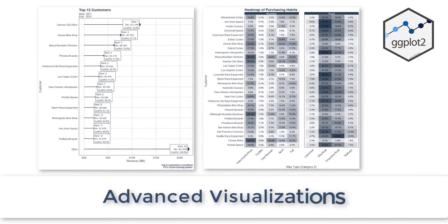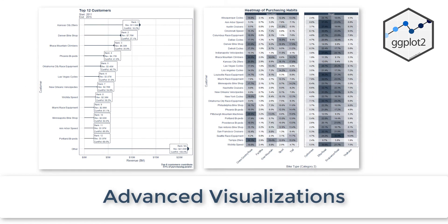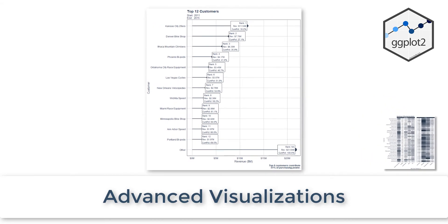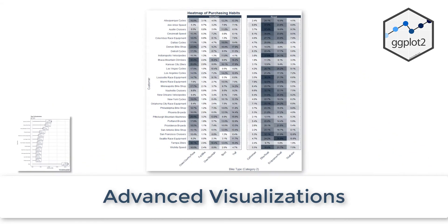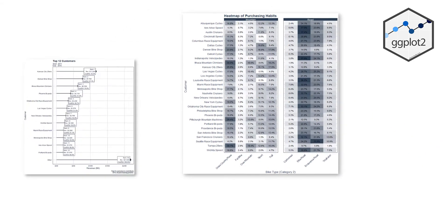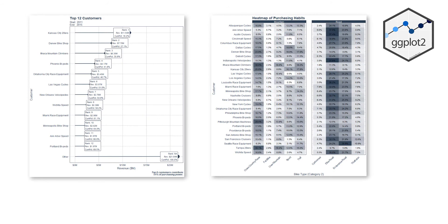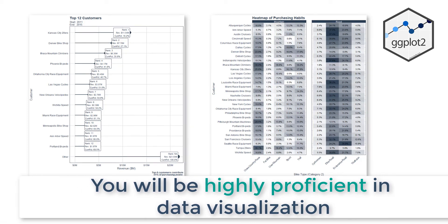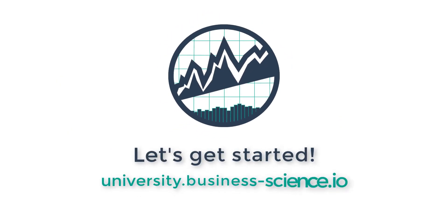We end the week by creating two advanced visualizations shown at the beginning of this presentation: the Top End Customer Plot and the Customer Buying Habit Heatmap. By the end of this week, you will be highly proficient with data visualization using GGplot2, the second most critical skill a data scientist must have. All right, let's get started.